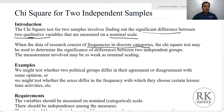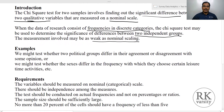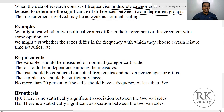Chi-square test may be used to determine the significance of differences between two independent groups, measured on a nominal scale. Examples where you can use a Chi-square test: you might test whether two political groups differ in their agreement or disagreement with some opinion, or whether the sexes differ in the frequency with which they choose certain leisure time activities.